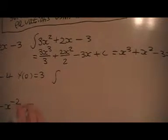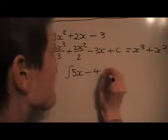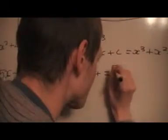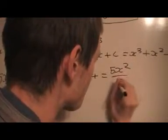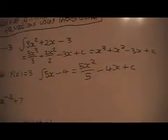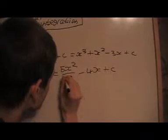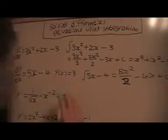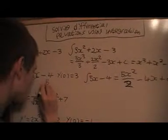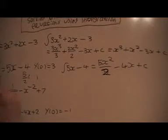Next we're going to find this one by integrating. I'm going to find the integral of 5x minus 4, so when I integrate that I get 5x squared over 2 minus 4x plus c. That's a 2 because I'm dividing by the new power — sorry about that. So I've got 5 halves x squared.